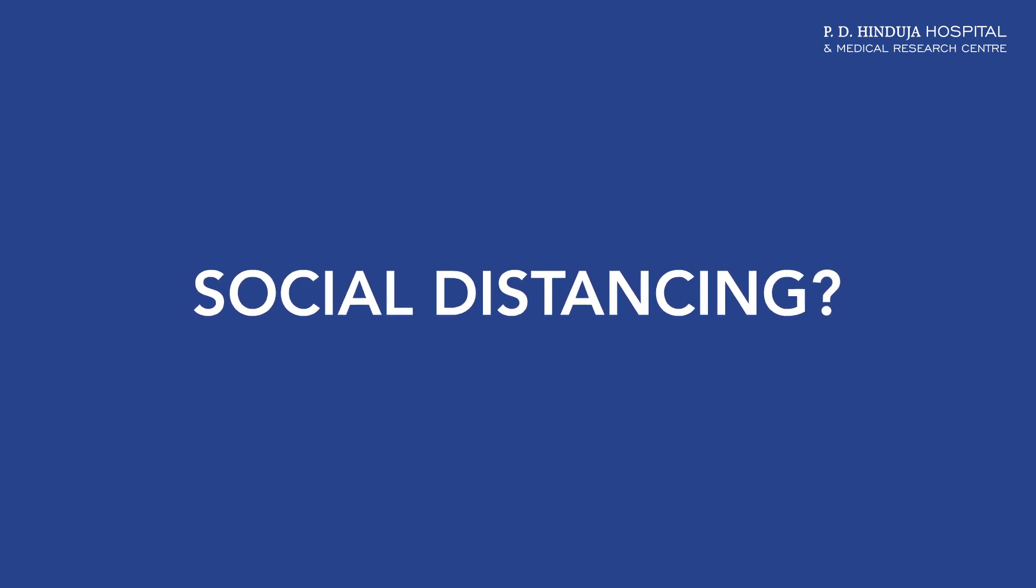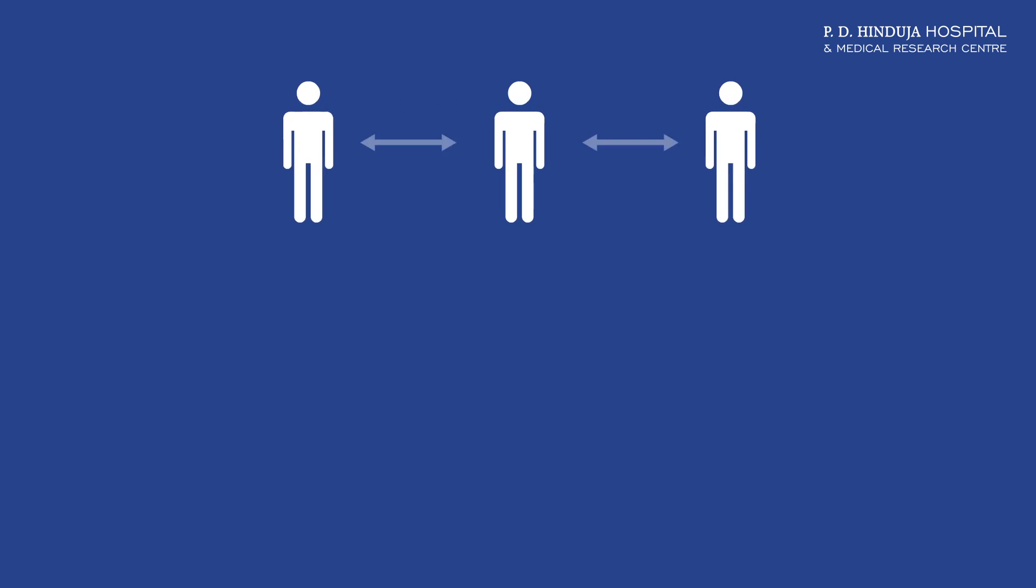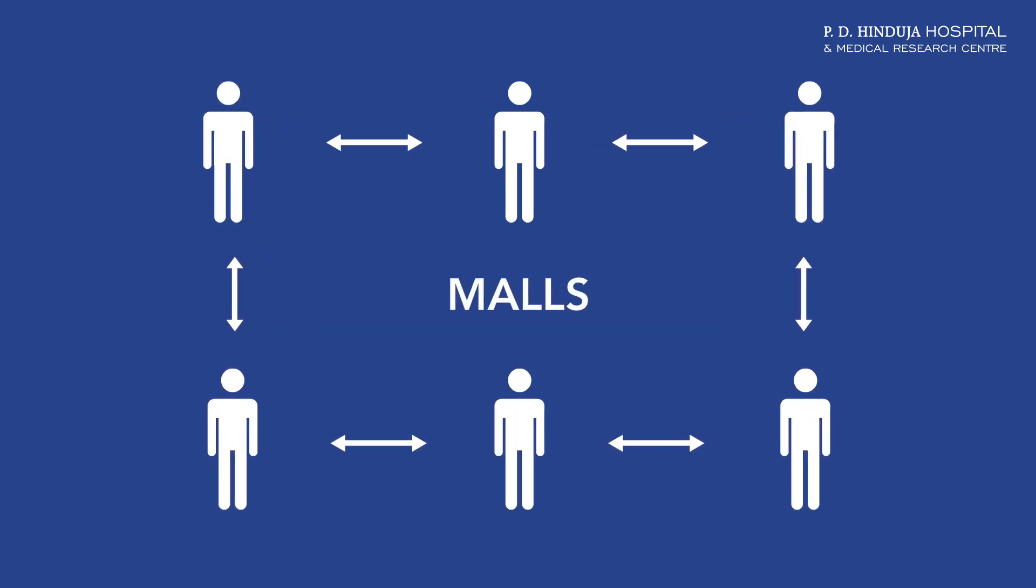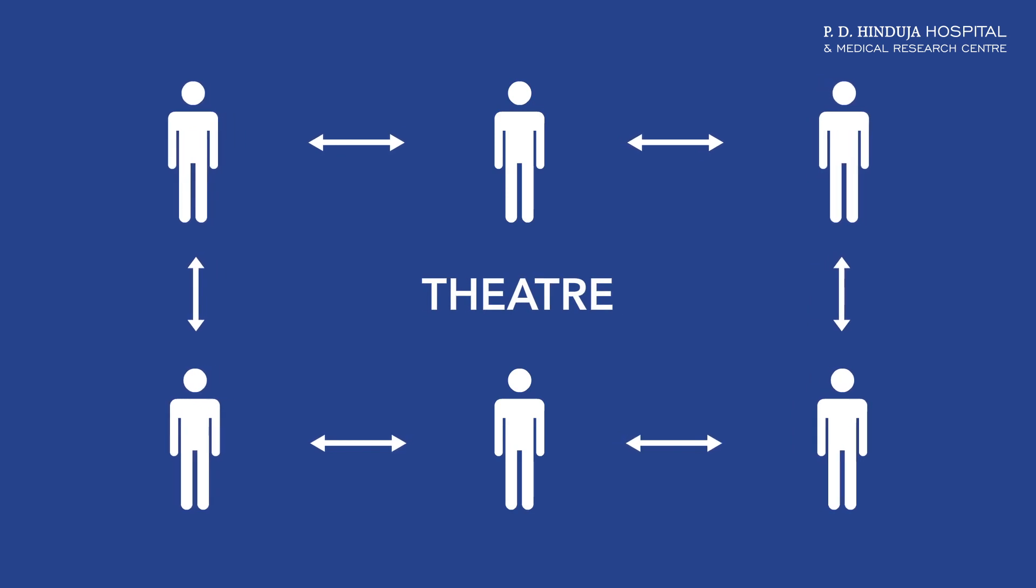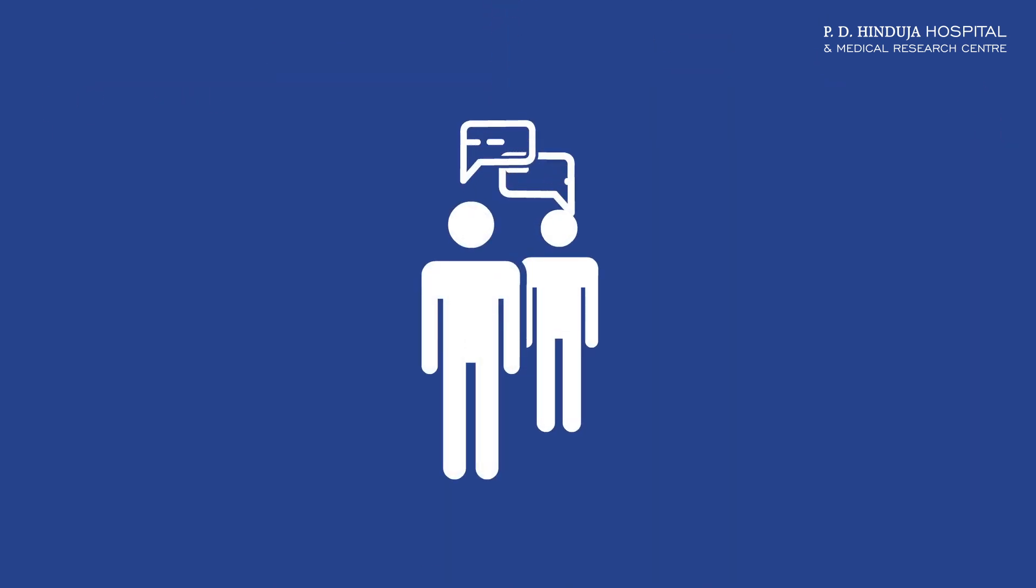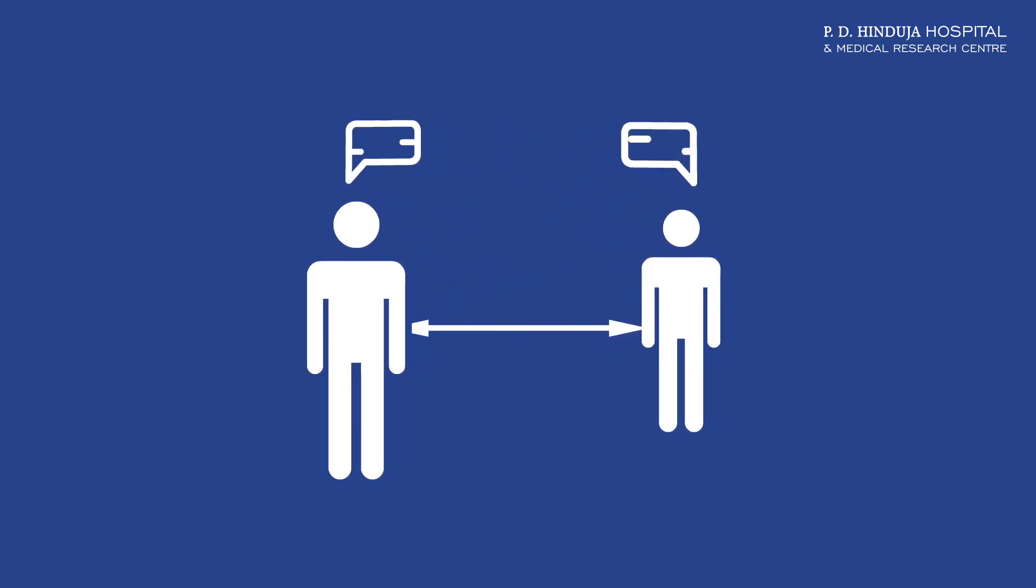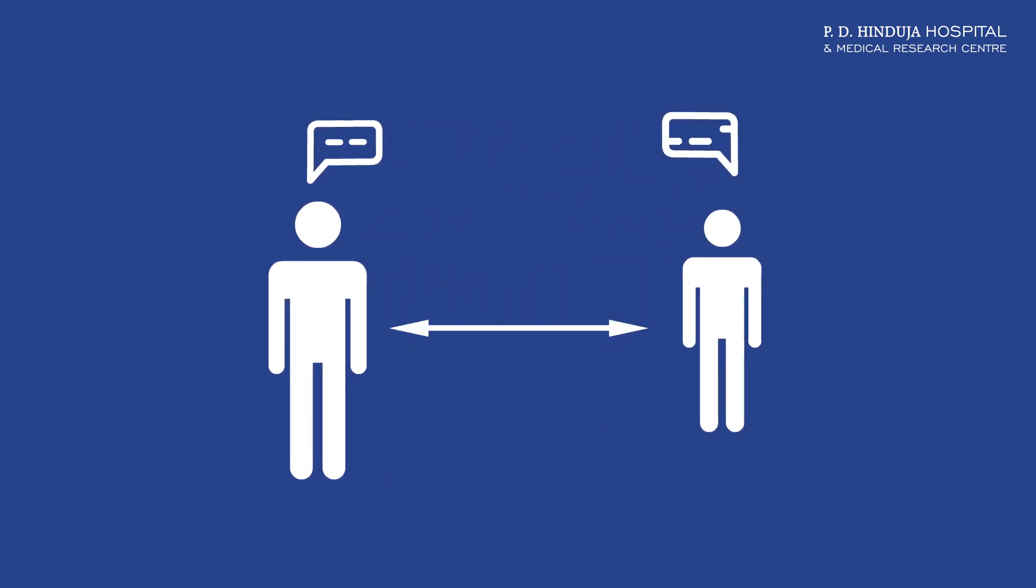So what is social distancing? It is avoiding crowding at places like public transport, malls and theatres to stop the spread of the infection. It also requires individuals to distance themselves while talking to each other, like in elevators and so on.